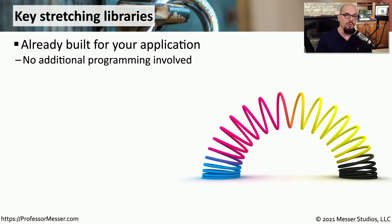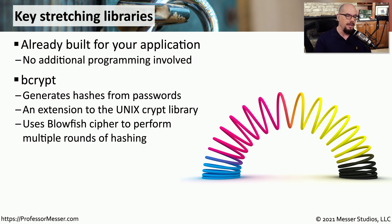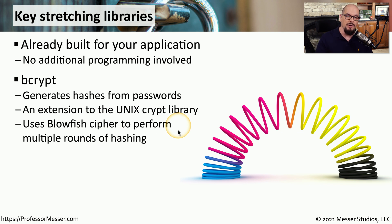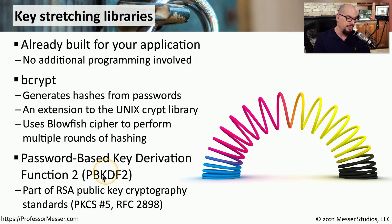Fortunately, if you're a programmer, you don't have to create one of these key stretching algorithms from scratch. There are a number of libraries that already exist to do this. For example, the bcrypt library will generate hashes from passwords, and it is an extension to the already existing Unix Crypt library. bcrypt uses the Blowfish cipher to perform multiple rounds of hashing on the plain text. Another common key stretching library is PBKDF2 — the Password-Based Key Derivation Function number two. It's part of the RSA public key cryptography standards, and it's a library you can use to make your applications much more secure.